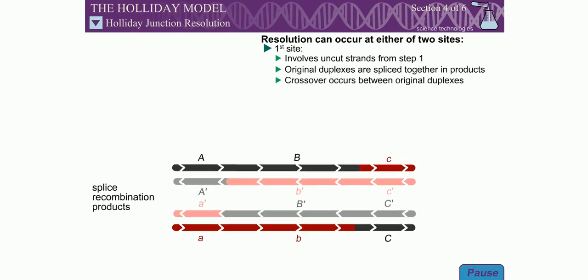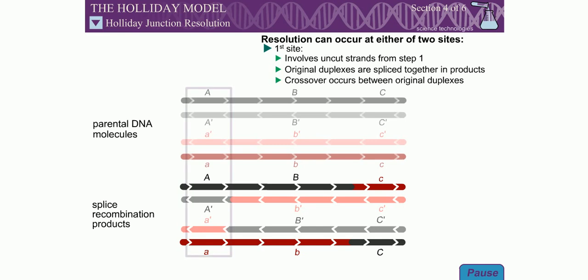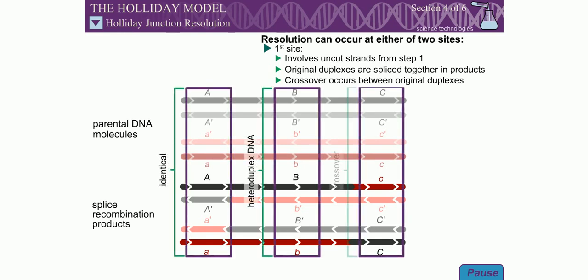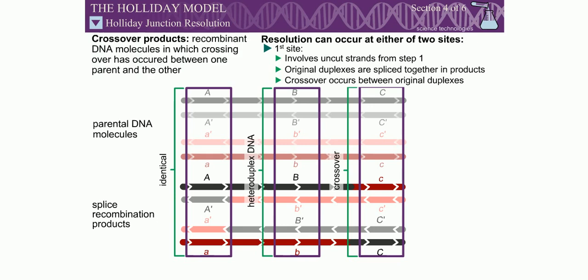The resulting duplexes now carry one pair of alleles from one parent, a region of heteroduplex DNA, and the pair of alleles from the other parent. Since the C alleles have switched from one duplex to the other, these products are also called crossover products.